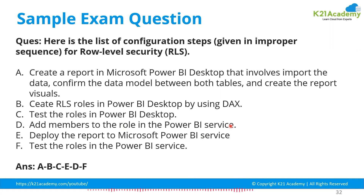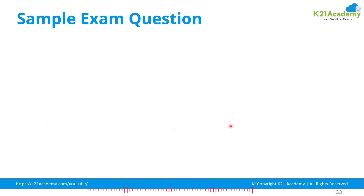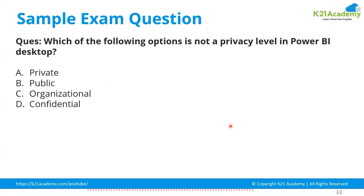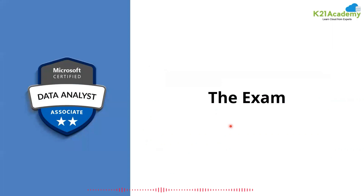Another sample question: 'Which of the following is not a privacy level in Power BI Desktop — Private, Public, Organizational, or Confidential?' The correct answer is Confidential. Privacy levels in Power BI Desktop include only three options: Private, Public, and Organizational.